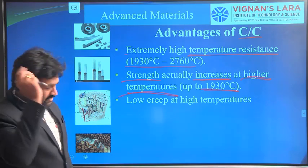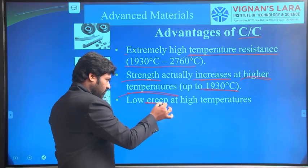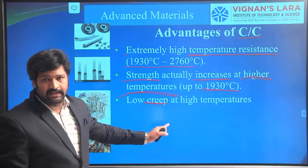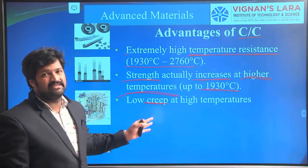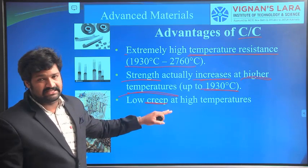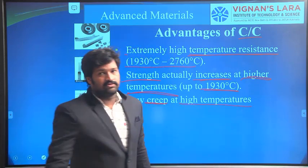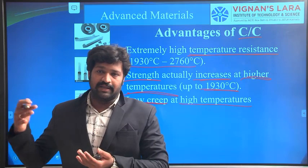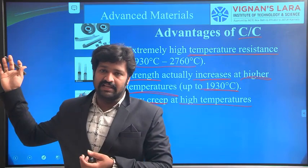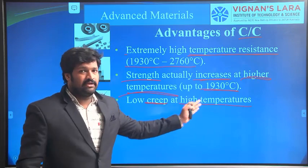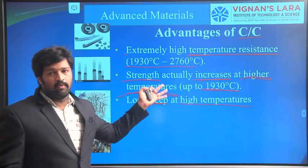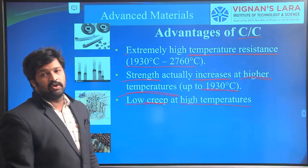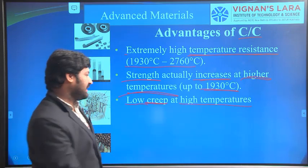Carbon-Carbon Composites have low creep — meaning high creep resistance. Creep is deformation under constant stresses. These composites show low deformation, meaning high creep resistance at high temperatures. At higher temperatures, where other materials would crack under constant stresses, carbon composites exhibit low creep and therefore high creep resistance.